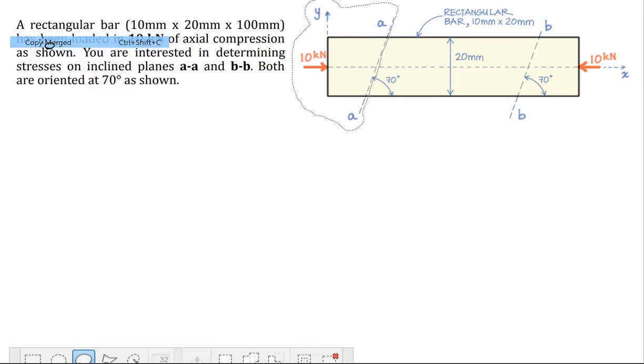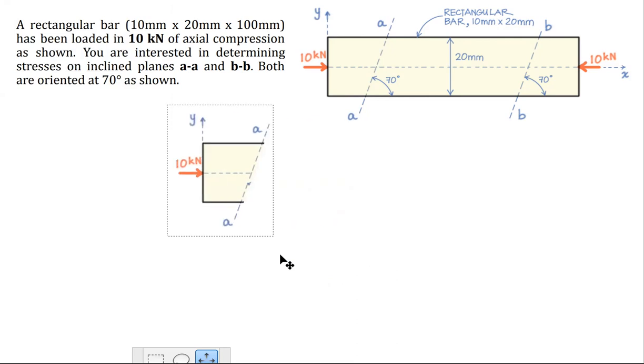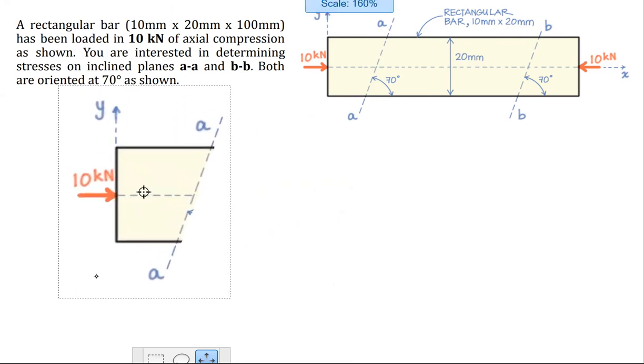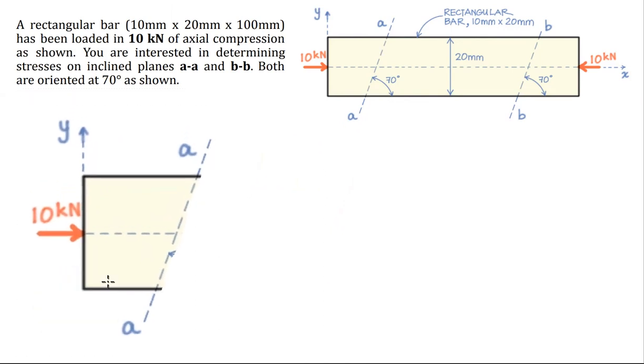I'm going to choose to take the left side of the free body. Edit, copy merge, edit, paste. And we will put that right about here. So we'll do this free body first, and then we'll do free body through plane BB. I'm going to go ahead and cut that now and then we'll draw on it a little bit later.